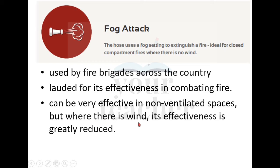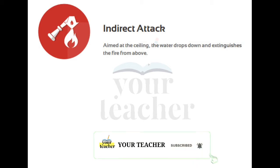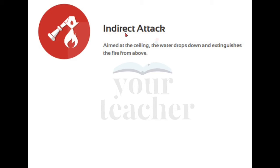The next technique is indirect attack. It is generally used in high-rise buildings or closed compartments. It is aimed at the ceiling — the water drops down and extinguishes the fire from above. Unlike fog attack, indirect attack uses powerful water jets, but as the name suggests, these are not directly applied to the fire; instead they follow an indirect approach.